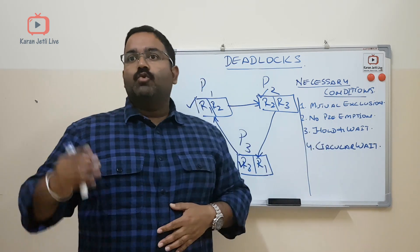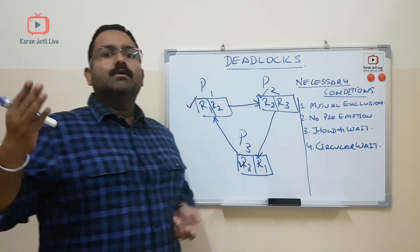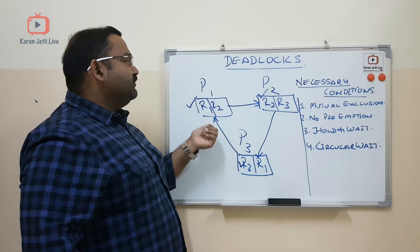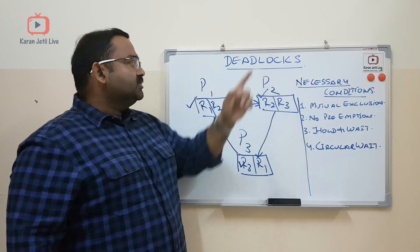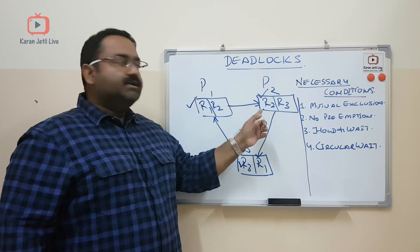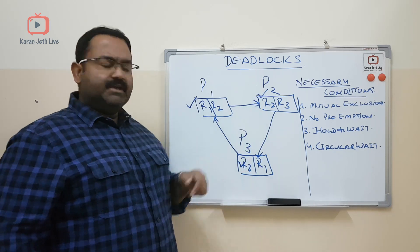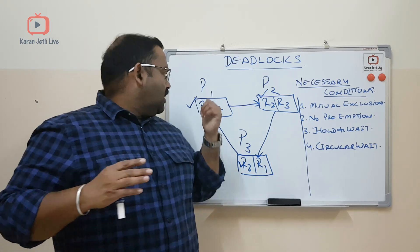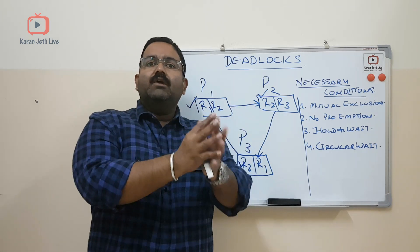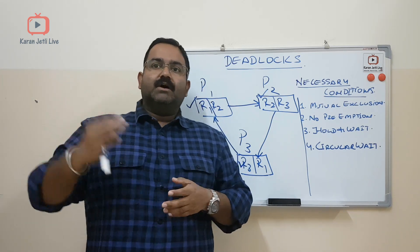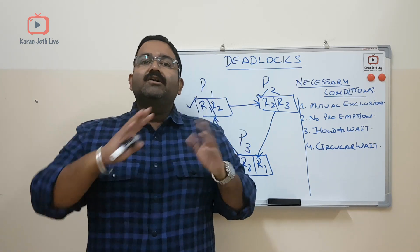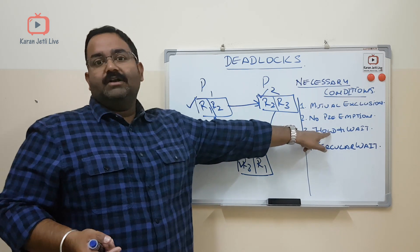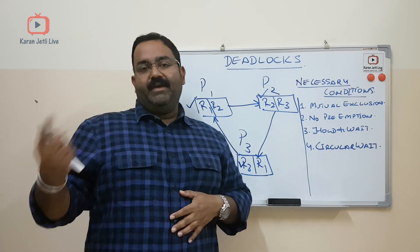The third condition is called hold and wait. P1 is holding R1 and waiting for R2. P2 is holding R2 and waiting for R3. P3 is holding R3 and waiting for R1. So all are holding one resource and waiting for some other resource, and none of them is releasing their resources. This condition is called hold and wait.